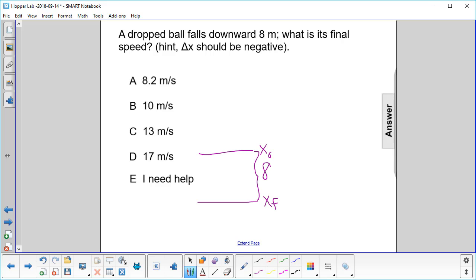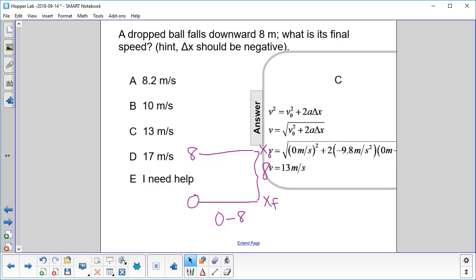So we always do final minus initial. So you would have, here's your final height, 8 is your initial. So final minus initial would be 0 minus 8. That's negative. Okay, so let's see how we solve the problem now.